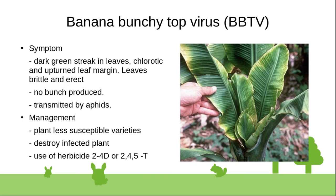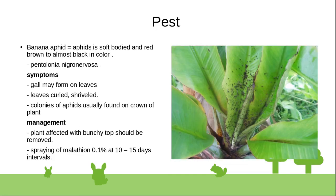Thrips (Haplothrips nigra/nervosus) is a pest of banana. Symptoms include gold coloring on leaves and colonial feeding usually found on the crown of the plant. Management: plants affected with bunchy top should be removed; spray with malathion at 0.1 percent at 10 to 15 day intervals.